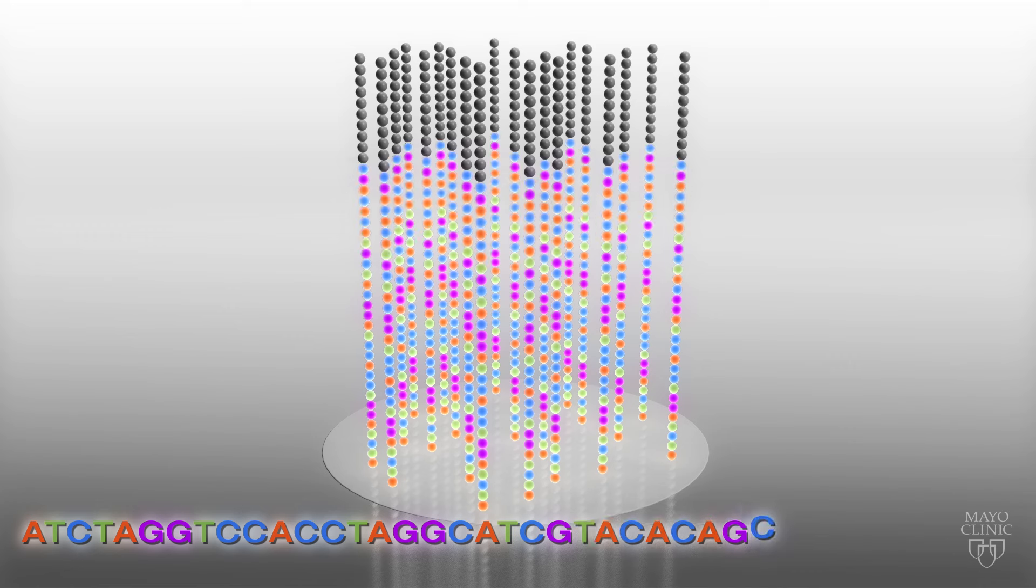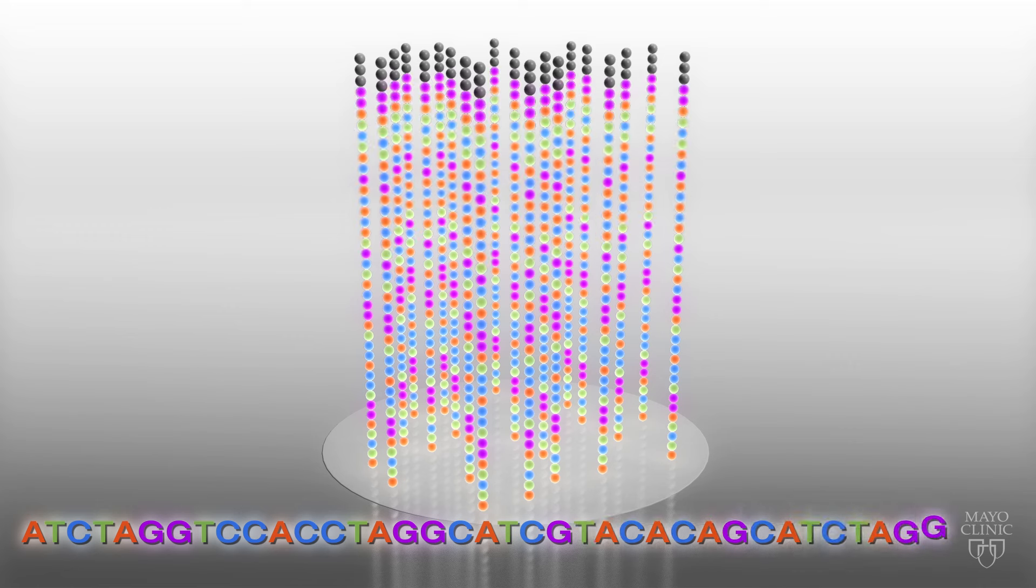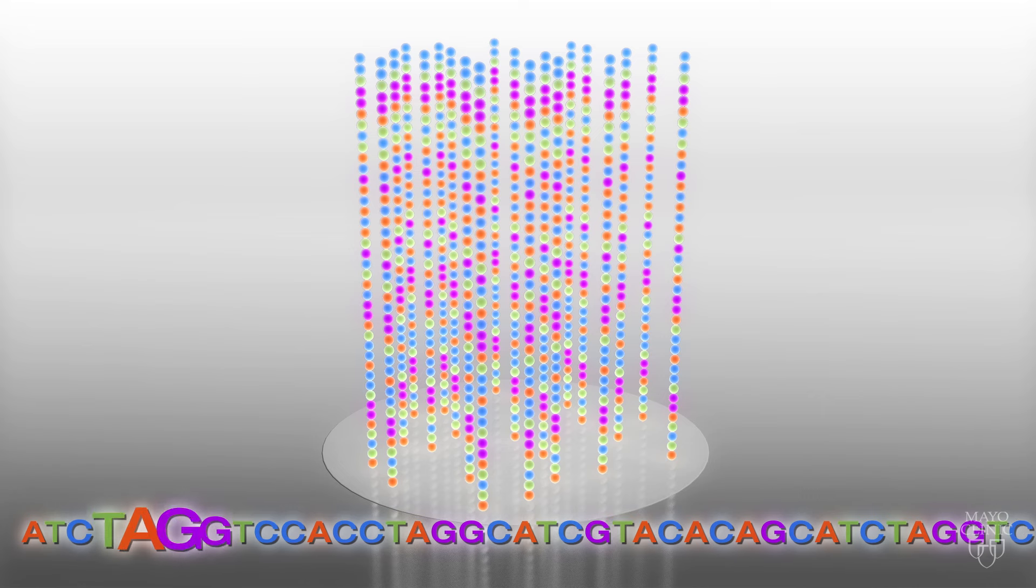Special sensors within the machine detect the different colored tags. This sequence of colors reveals the DNA sequence of each fragment.